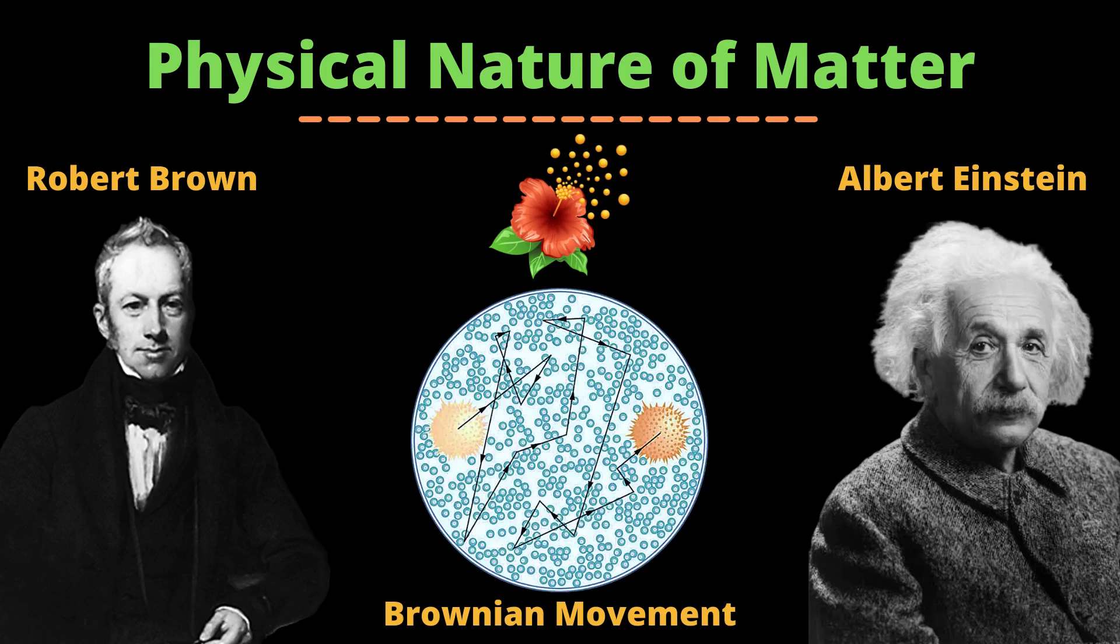In 1905, Albert Einstein explained that due to the constant collision of moving water particles, pollen grains moved. So we can conclude that matter is particulate in nature, and it consists of tiny moving particles.